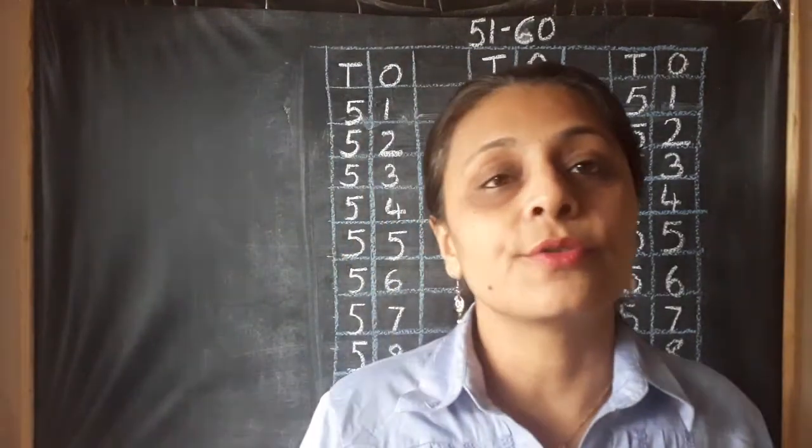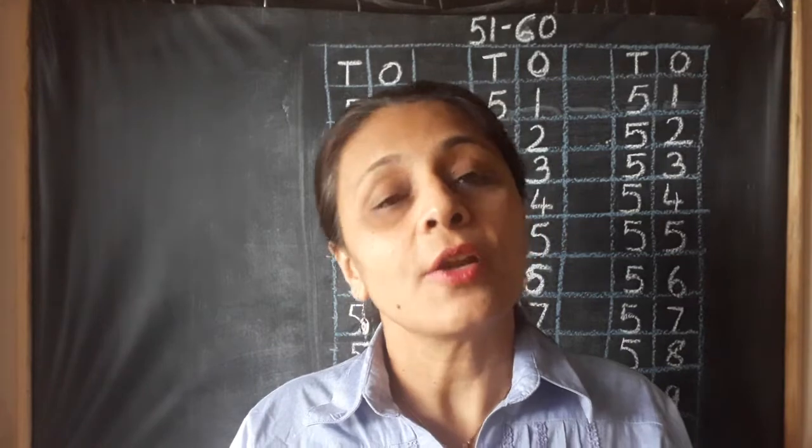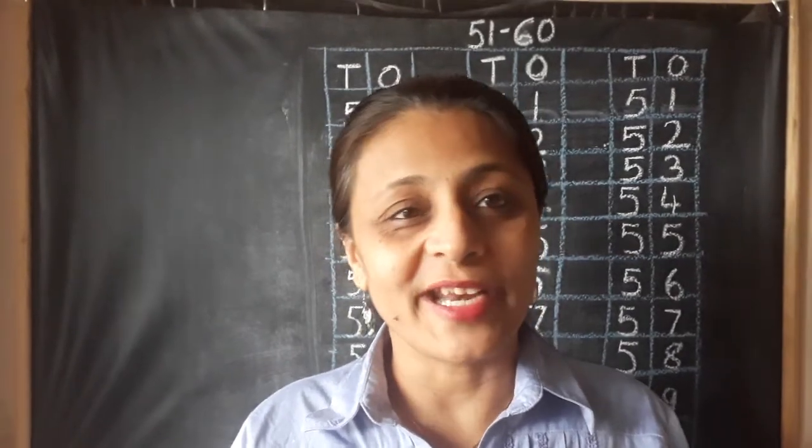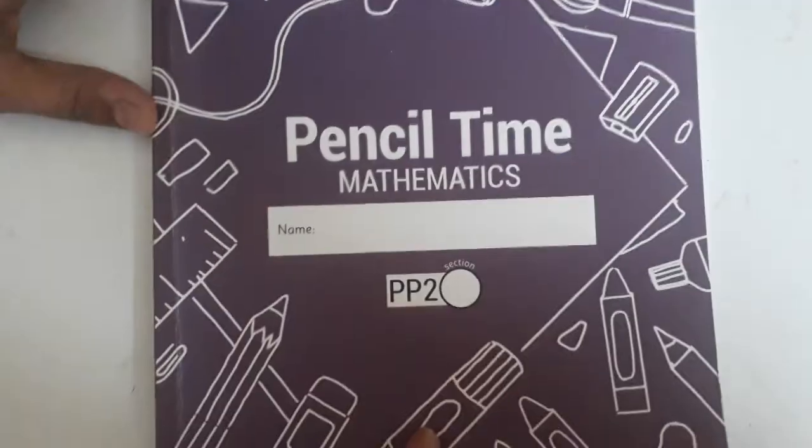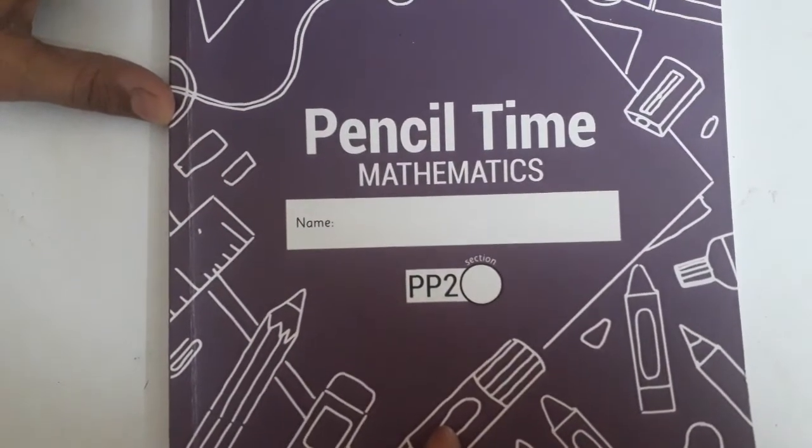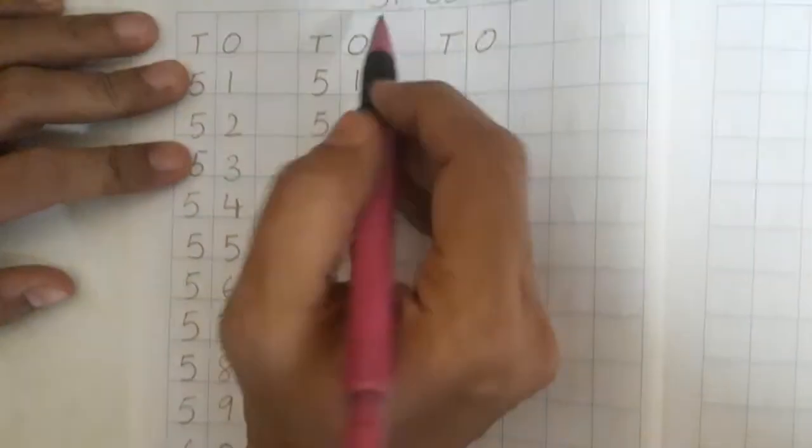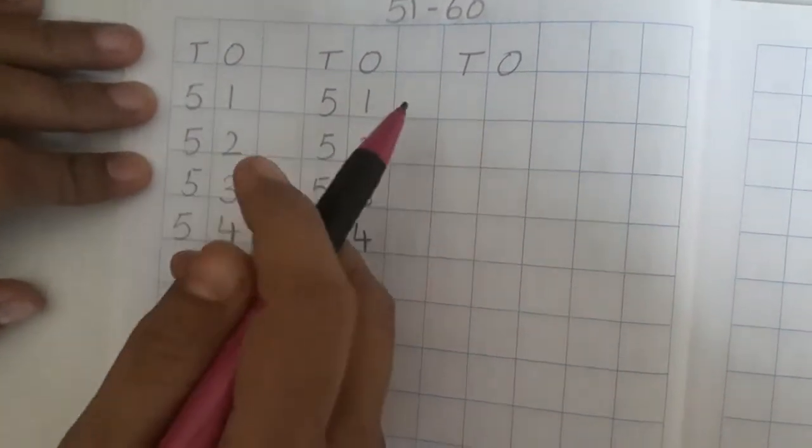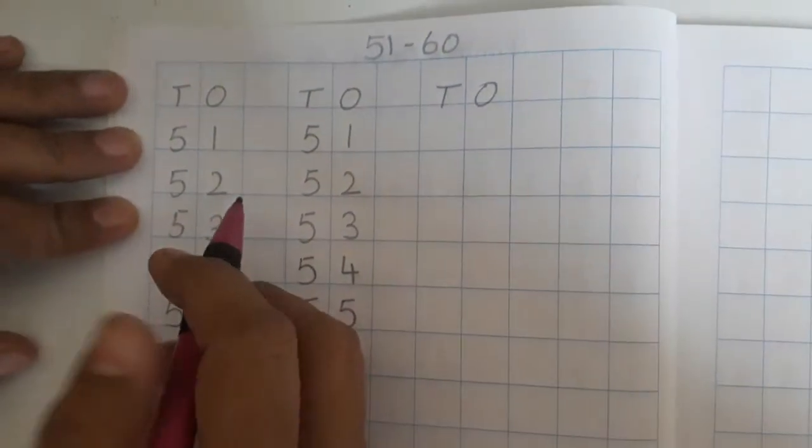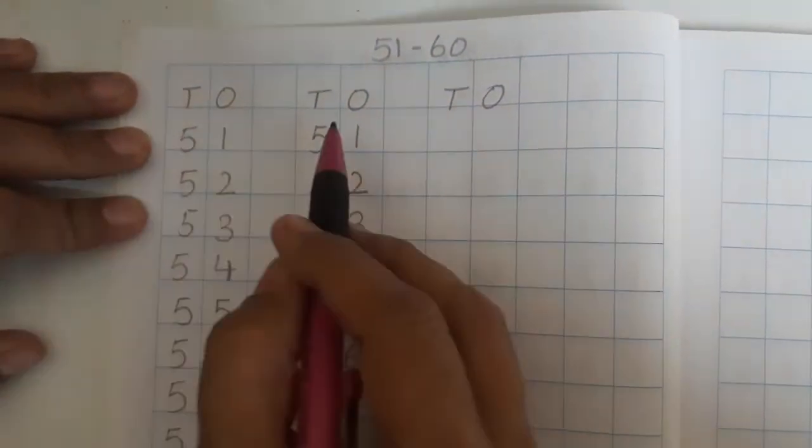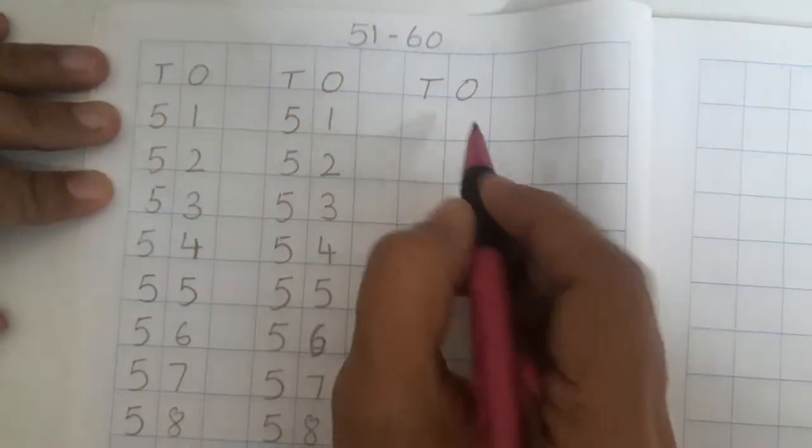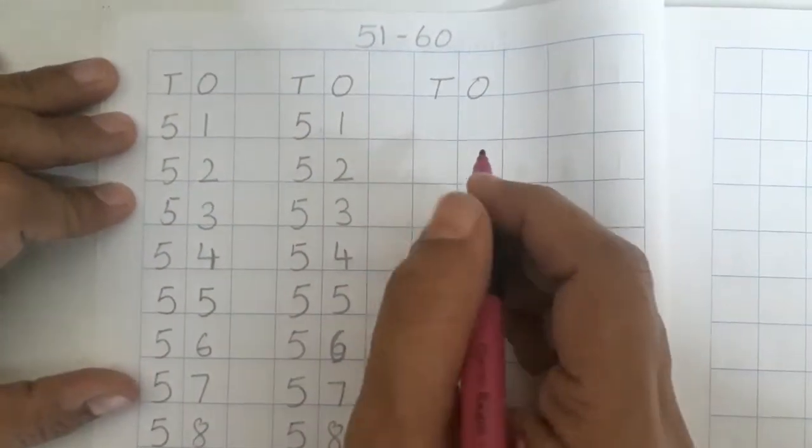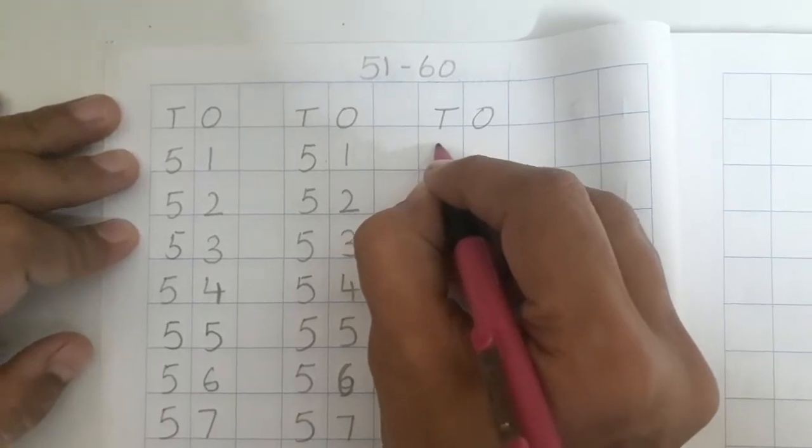This way we are going to write numbers 51 to 60 in our notebook also. So, are we ready with the notebook? Children, let's open pencil time mathematics. Now, first of all you are going to write heading. Heading will be 51-60. And you are going to write today's date. Now, you have to write 51 to 60 three times.